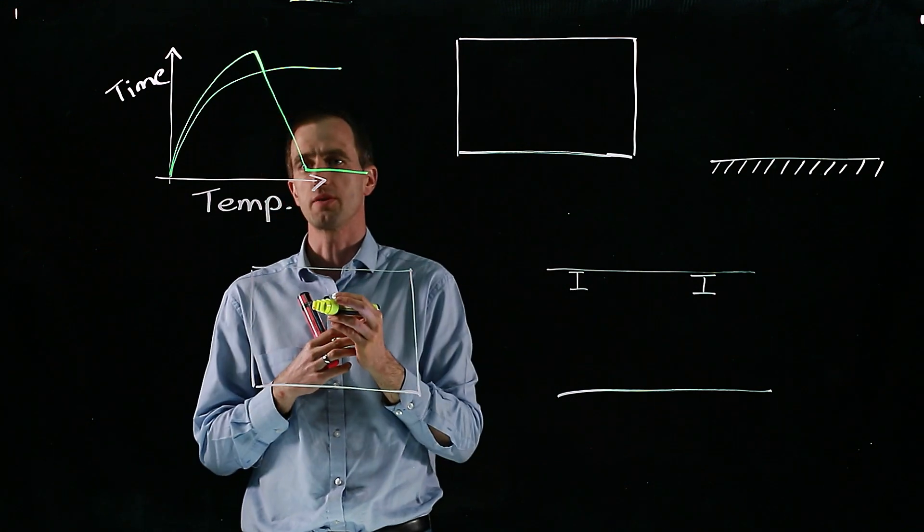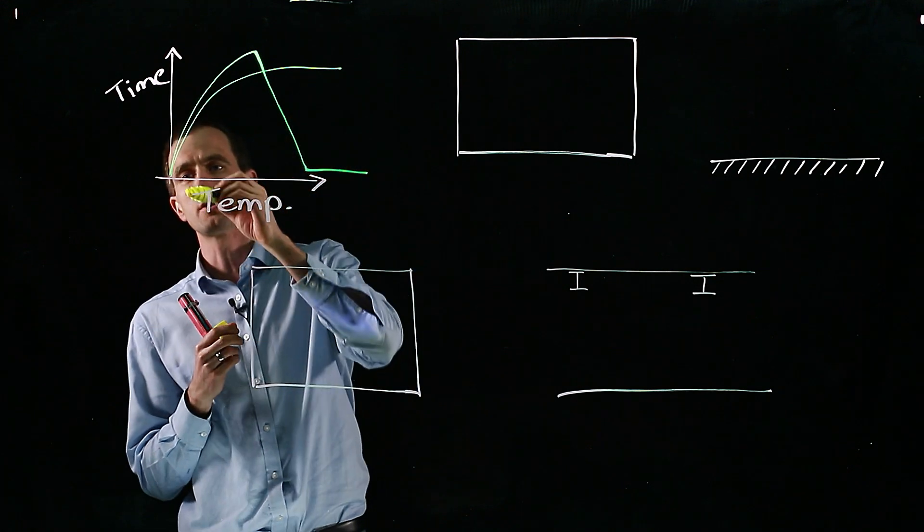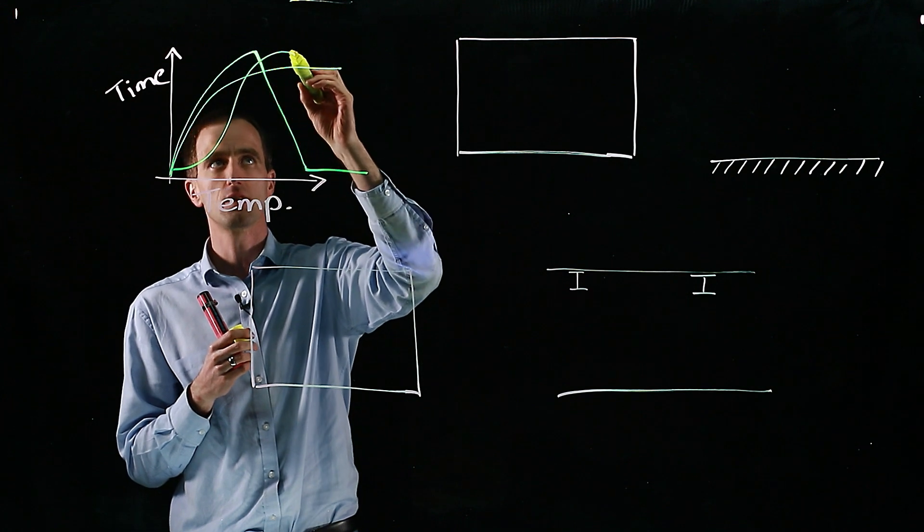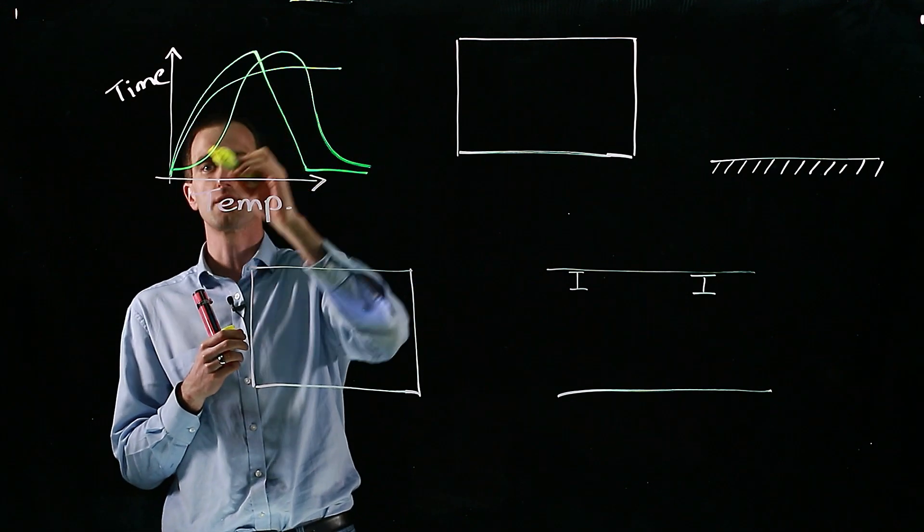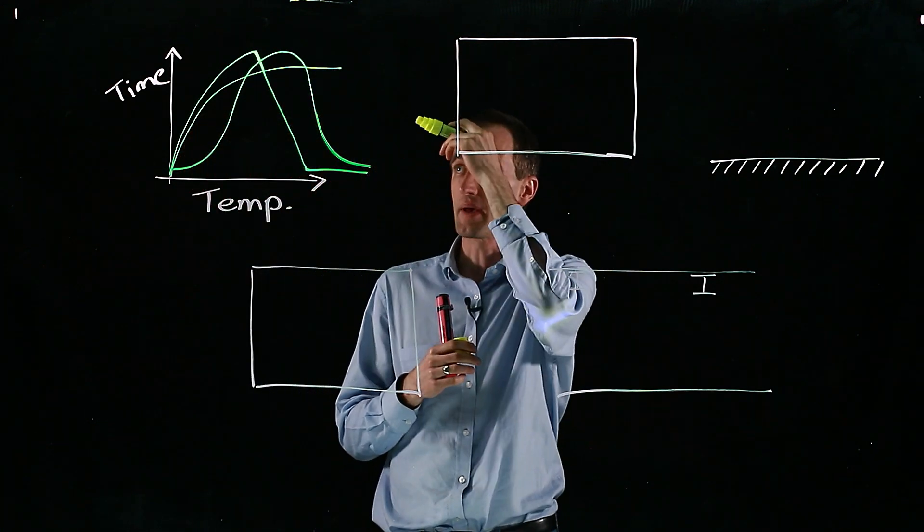We can also beyond that use zonal models, one or two zone models, which take a little bit more into account with initial ignition and increasing heat release rate and different behavior. So there's the zonal models.